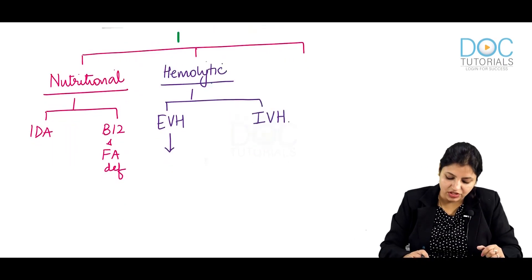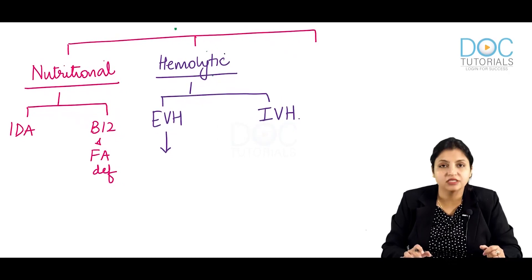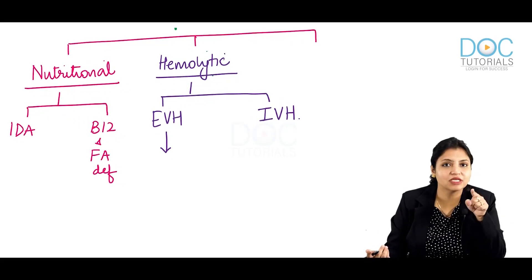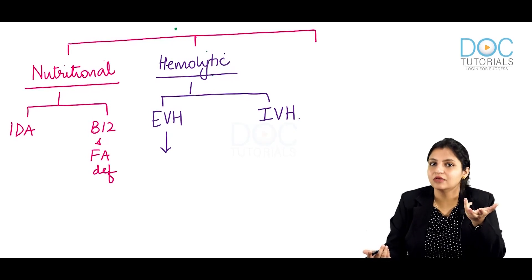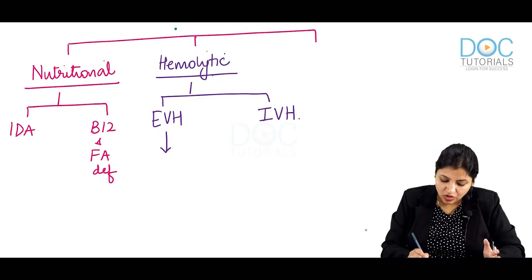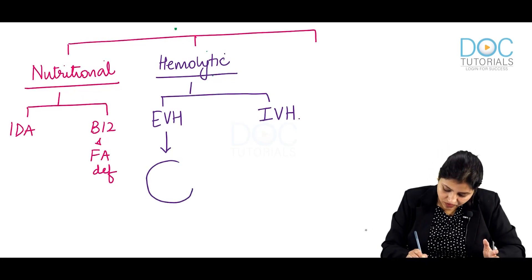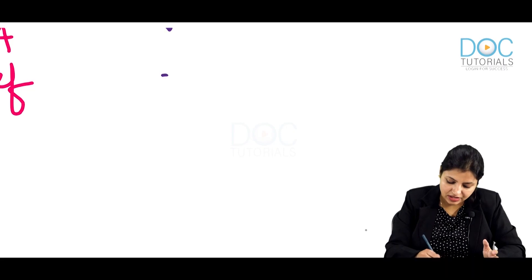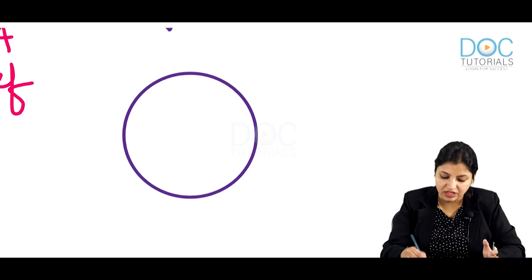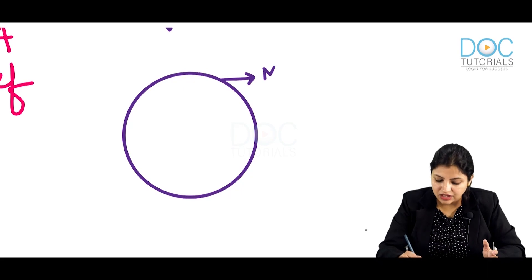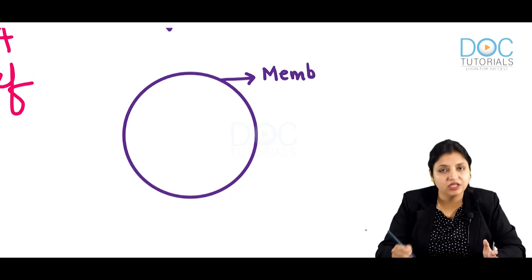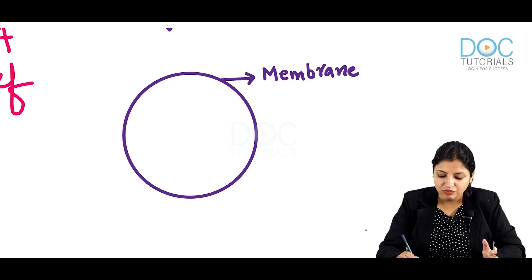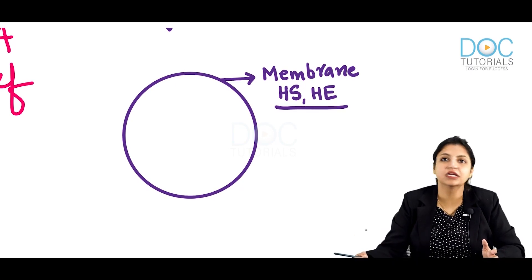When we talk about extravascular hemolysis, the damage usually occurs in the spleen — the most common organ for checking all the cells. Most cells are eaten up by the spleen. Why will the spleen eat any cell? Either there is a defect in the membrane. Membrane defects are usually hereditary spherocytosis or hereditary elliptocytosis.